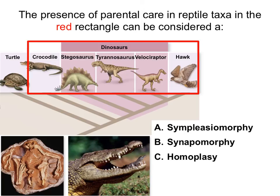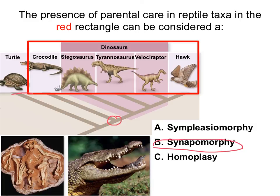Let's look at the example of parental care in reptiles. All the organisms within the red box have parental care, and they inherited it from their most recent common ancestor who also had parental care. Since this is a trait inherited from the recent common ancestor and is unique to this group — not shared by other members such as turtles — this is a synapomorphy that distinguishes crocodiles, dinosaurs, and birds from other reptiles.